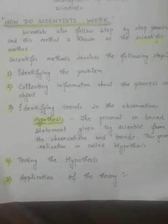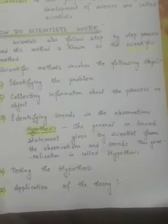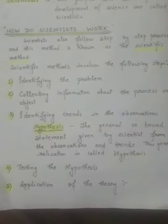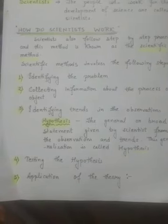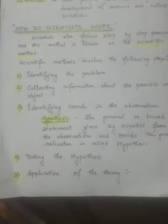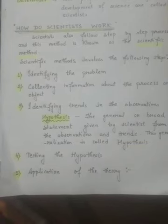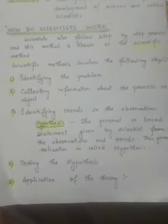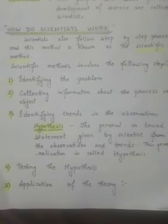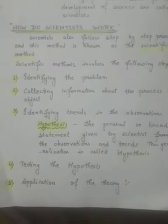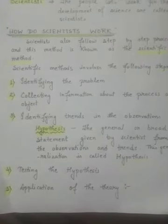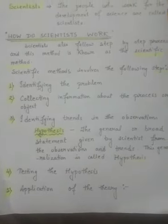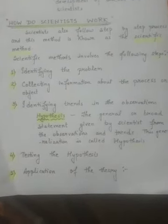Next comes the application of the theory. The theory or law so developed is then used to suggest, stimulate, and direct further experiments. When a theory has been experimentally proved and achieved, it is then applied — many useful machines and materials are made on the basis of these theories put forward earlier.